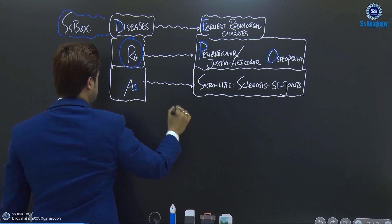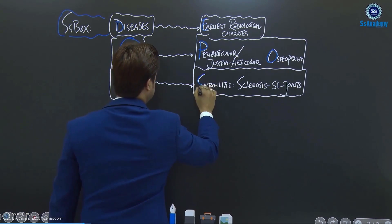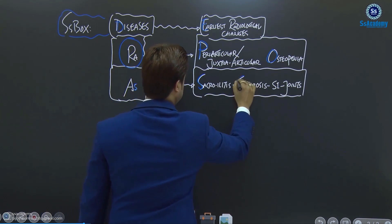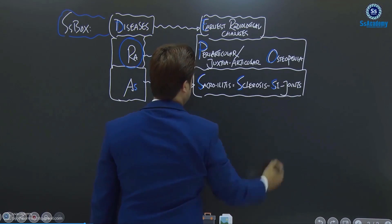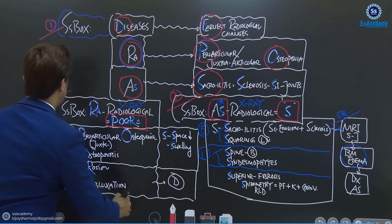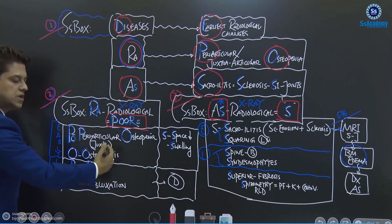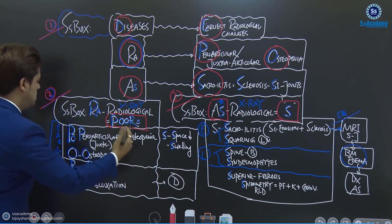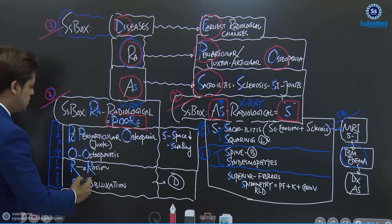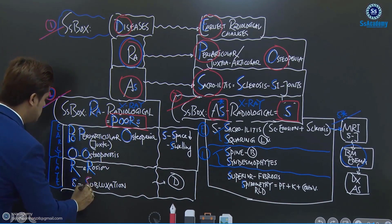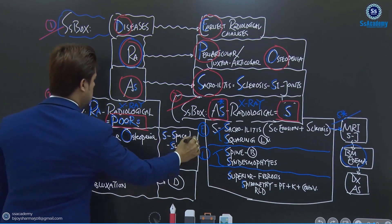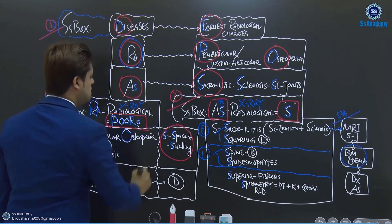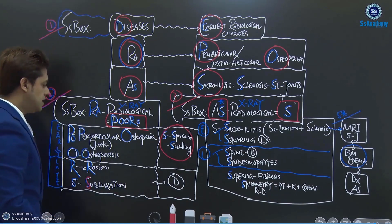Ankylosing spondylitis is the S4 sacroiliitis. It is S4 sclerosis of the SI joints. So the 4 for the periarticular osteoporosis, Roshan and S4 — you see the subluxation and early changes at the soft tissue swelling.